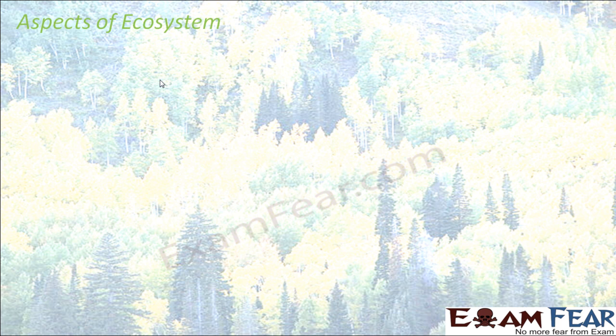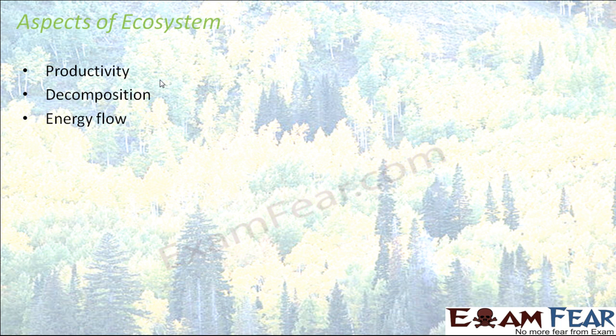So far, we have spoken about what is an ecosystem, the different types of ecosystem, and the different components of ecosystem. Now we will talk about some important aspects of ecosystem — not just the components or types, but how exactly an ecosystem plays an important role in this universe. The aspects we will discuss are productivity, decomposition, energy flow, and nutrient cycling. These four aspects together will help you understand the entire working of an ecosystem.